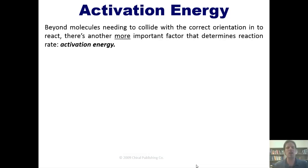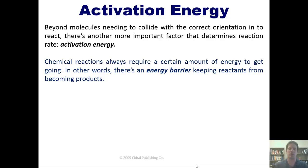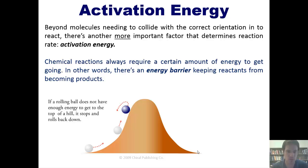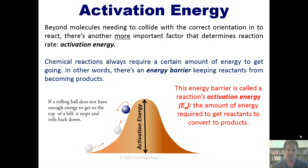But there's one more factor to consider. Beyond molecules needing to collide with the correct orientation, there's another more important factor that affects reaction rate: activation energy. Chemical reactions always require a certain amount of energy to get started. There's an energy barrier keeping reactants from becoming products. In order to get that reaction to actually proceed, you have to roll the ball up the hill first — that requires an energy investment. This energy cost is called activation energy, or E sub A.